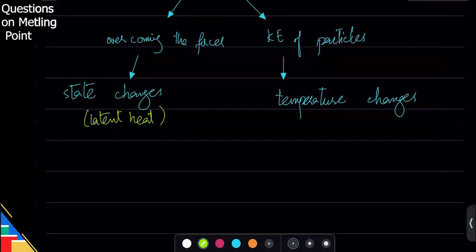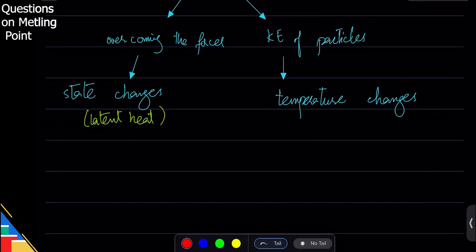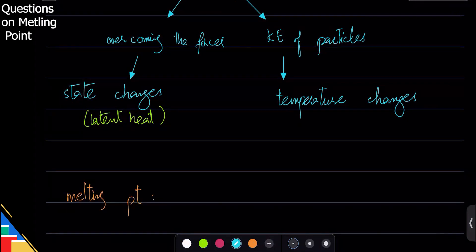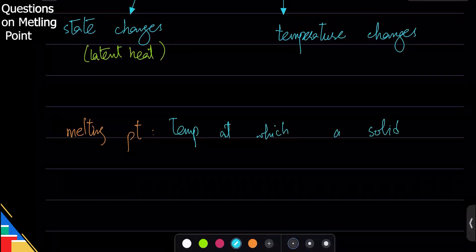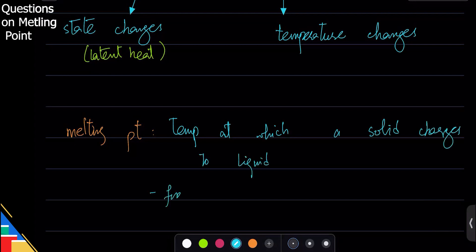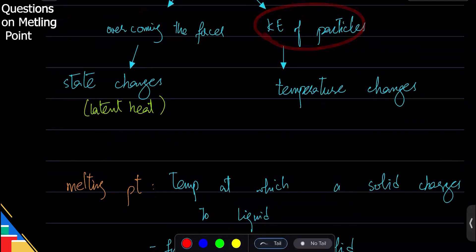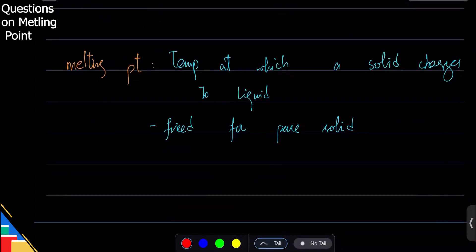Why does anything have a high boiling point or high melting point? Simply because the forces are very strong — we need more energy to break the forces. The first definition we need is: what is a melting point? It is a temperature at which a solid changes to liquid. We heat it up, the particles move faster, they gain kinetic energy, and eventually they overcome the forces and the solid changes to liquid.